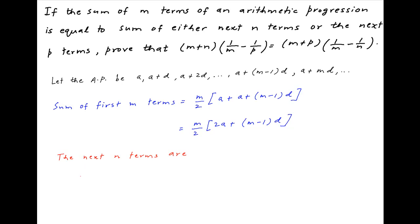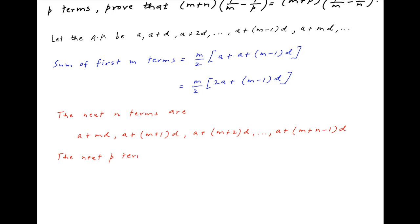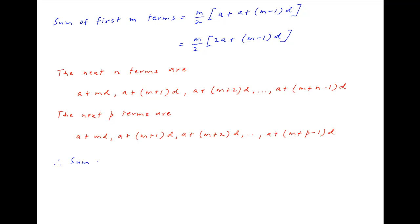The next n terms of this series start with the m plus 1th term, which is a plus md, followed by a plus m plus 1 times d, a plus m plus 2 times d, and so on. The nth term of this series is a plus m plus n minus 1 times d. Similarly, the next p terms start at a plus md and end at a plus m plus p minus 1 times d.